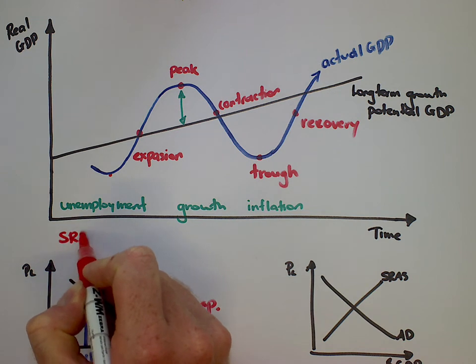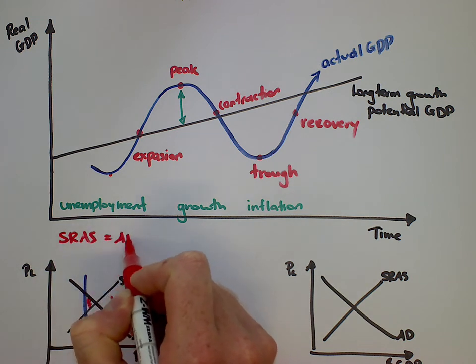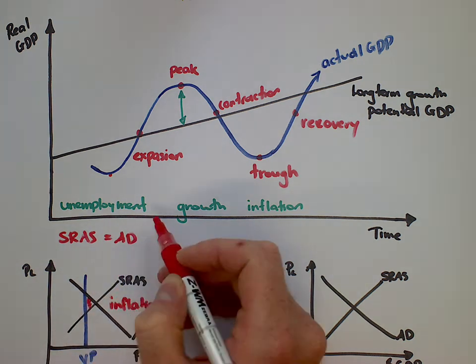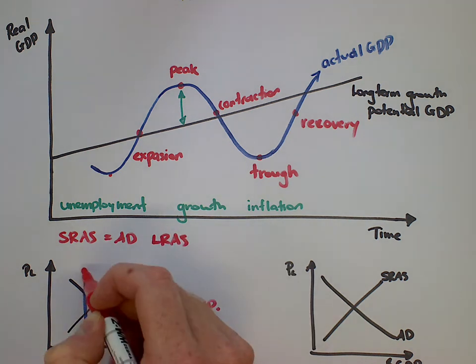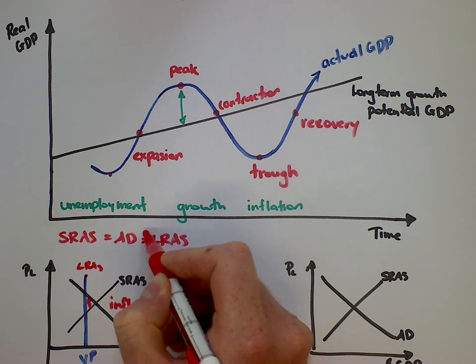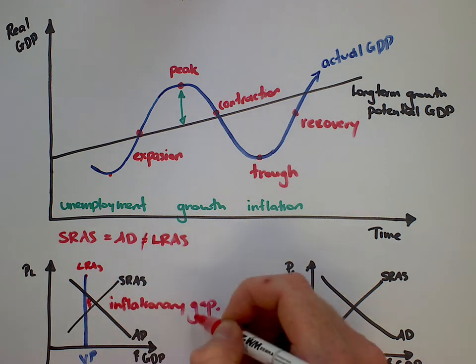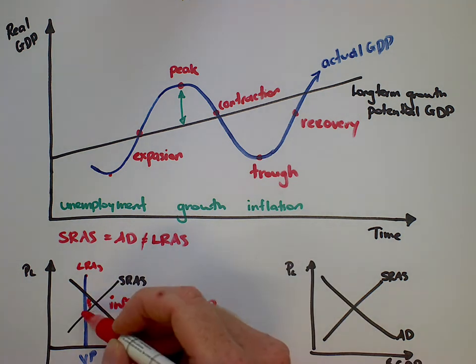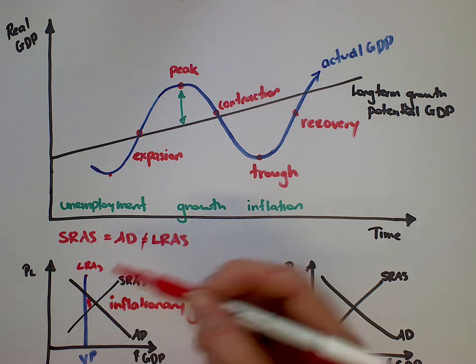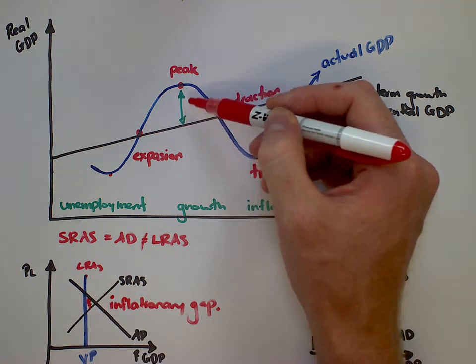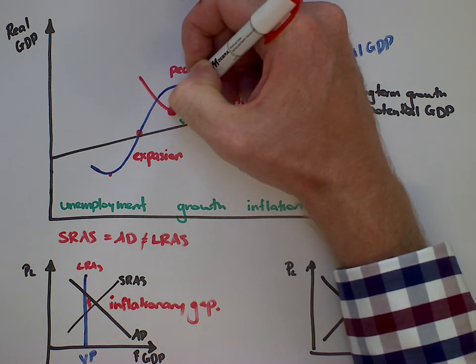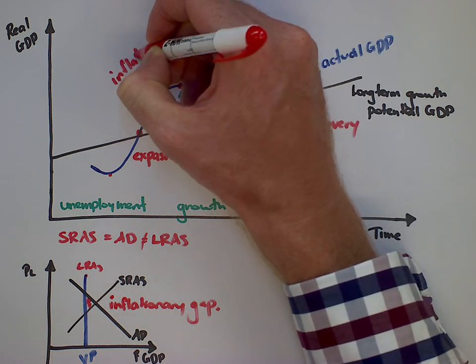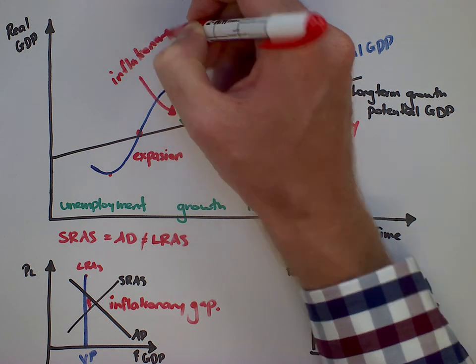This is called an inflationary gap. Inflationary gap being the idea that where short run AS equals aggregate demand, this point is greater than the long run aggregate supply, which is this blue curve here. And we can say that this equilibrium has an inflationary gap, generally caused by an increase in aggregate demand to start with, which links up to this idea up here.